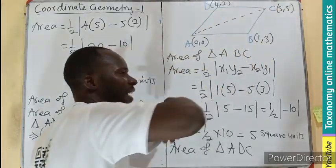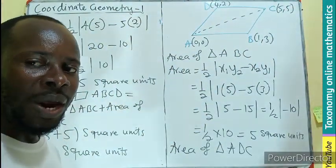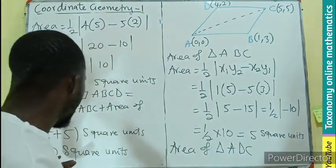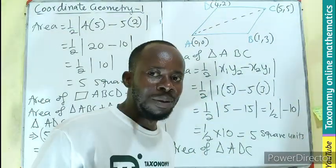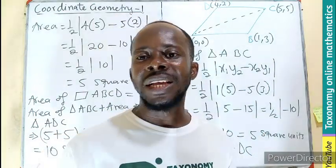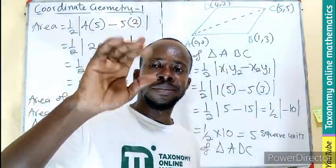This will give us 10 square units. I'm sure the concept is clear. We could also divide it this way to have the triangles here and here. If you do it by finding the area of the two and adding them together, it will still arrive at 10 square units. Thanks for watching. Like, share, and comment. Bye bye.